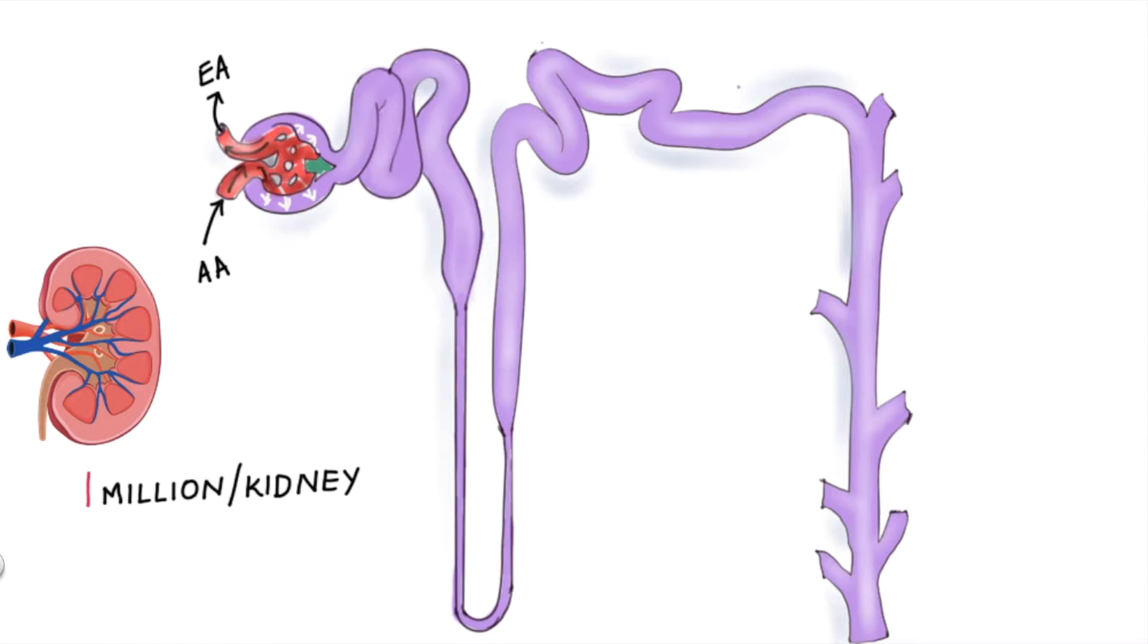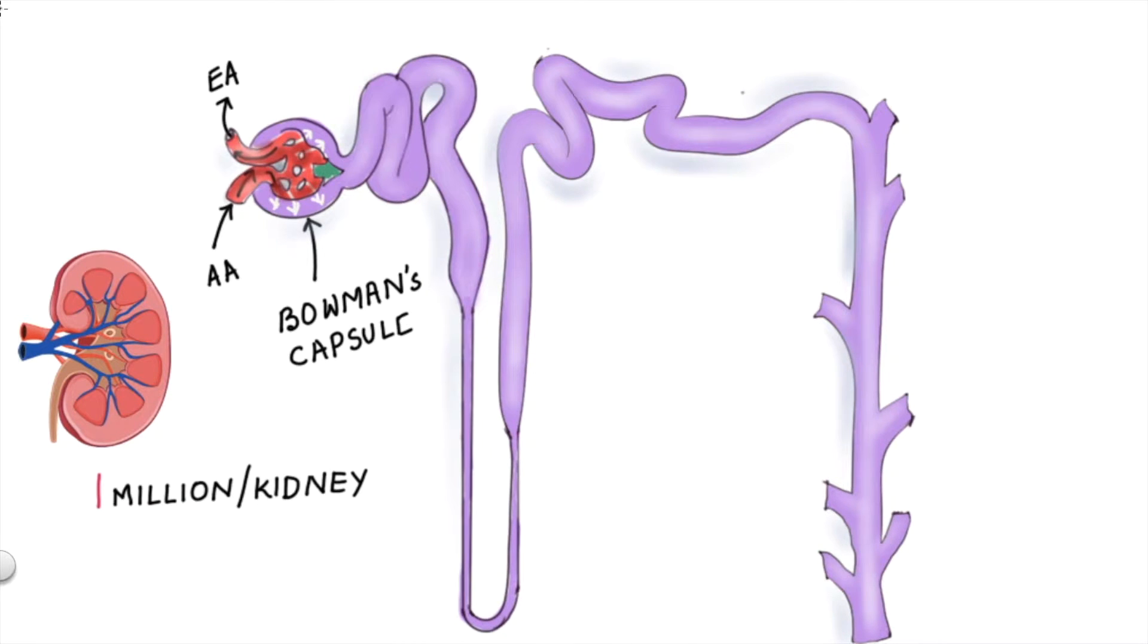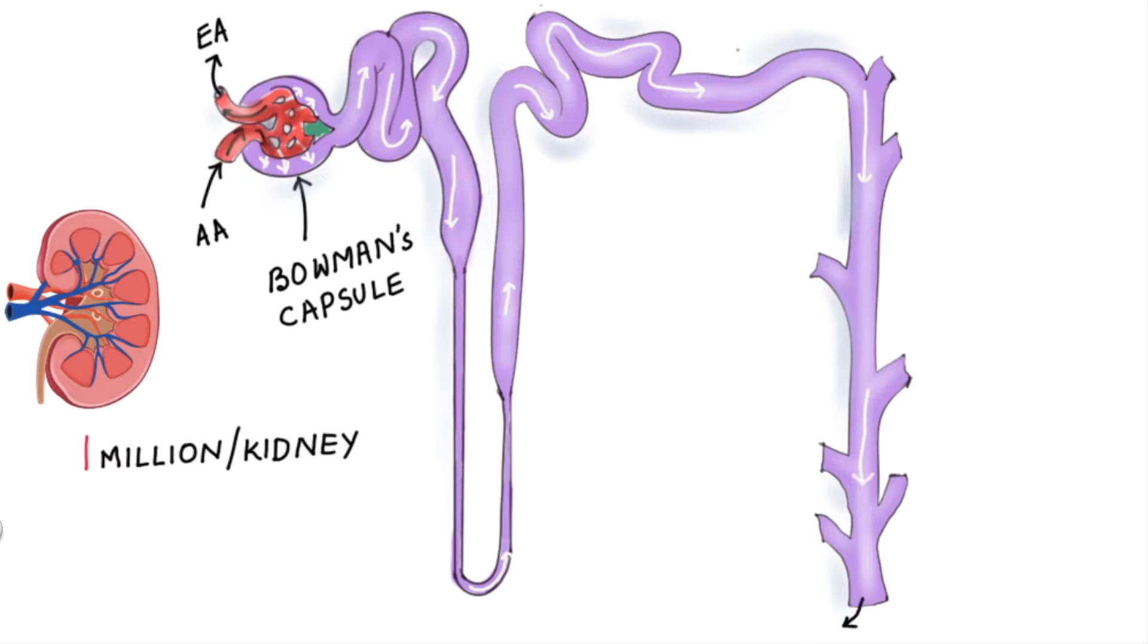components of the blood are filtered out into an area known as Bowman's capsule. The filtered components, collectively known as glomerular filtrate, pass into the tubules, eventually enter the collecting duct, and exist as urine.